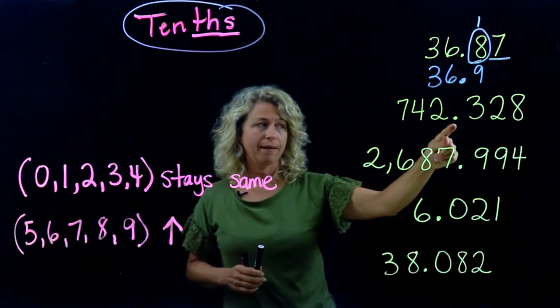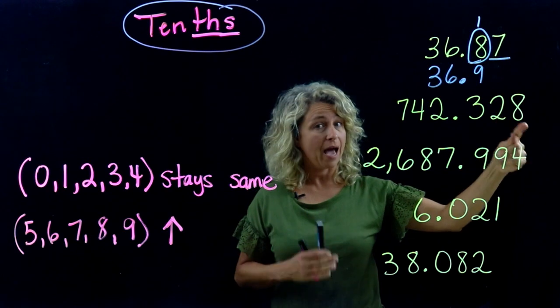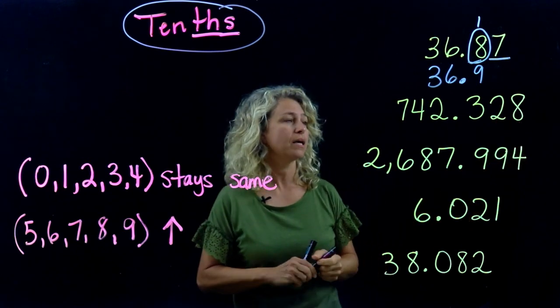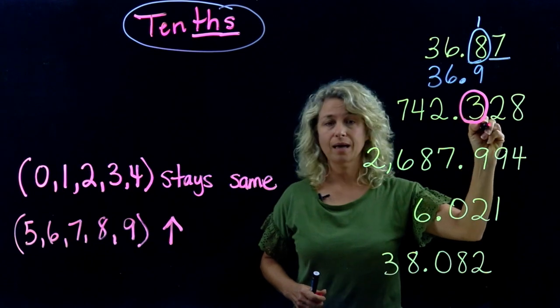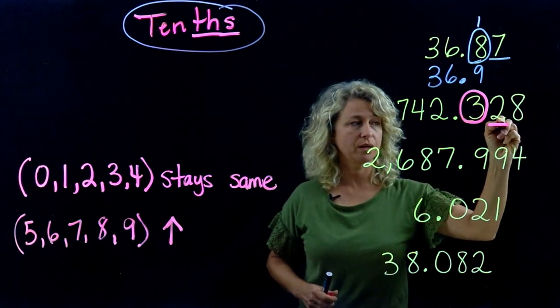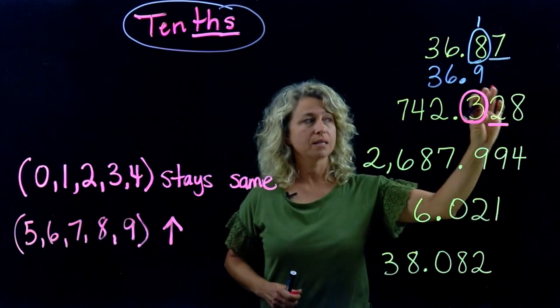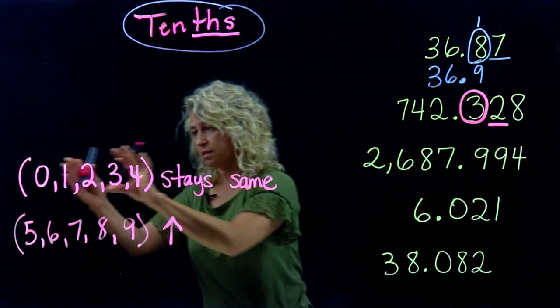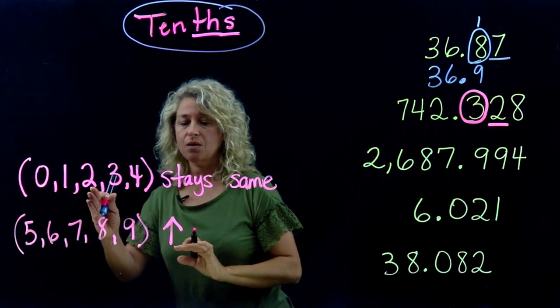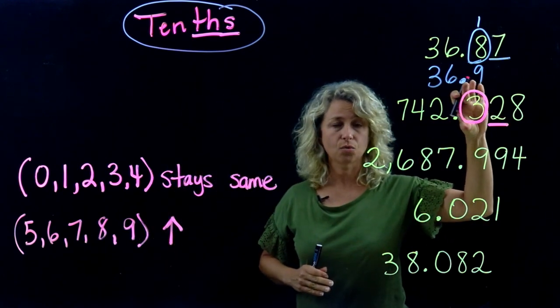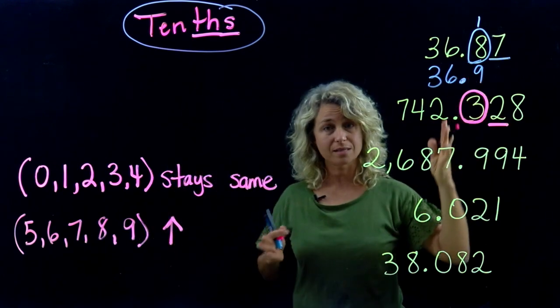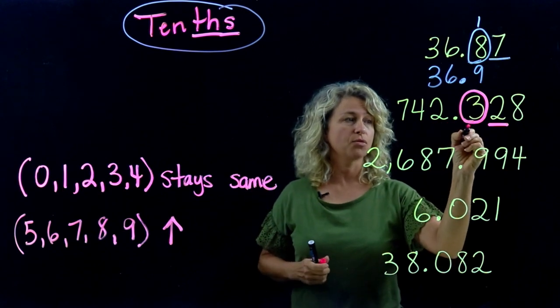Example: 742.328. Let's round this one to the tenths place. Underline the next digit—it happens to be in the hundredths. Take a look at the two. Is it in this list? Sure, it's right here—stays the same. That lets you know this digit you're rounding to, the three, will stay the same. So three.